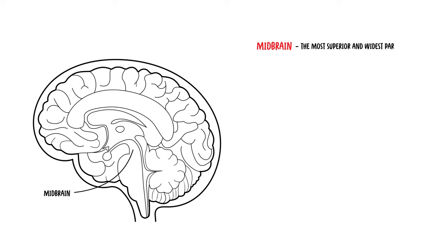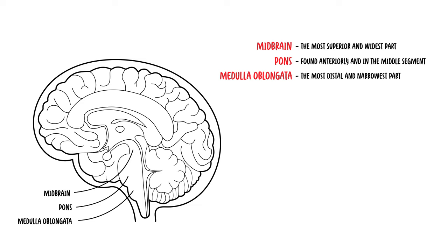The midbrain is the most superior and widest part of the brainstem. Below it is the pons, and the medulla oblongata is the most distal and narrowest part of the brainstem. The parts of the brainstem will be focused on in more detail in separate videos.